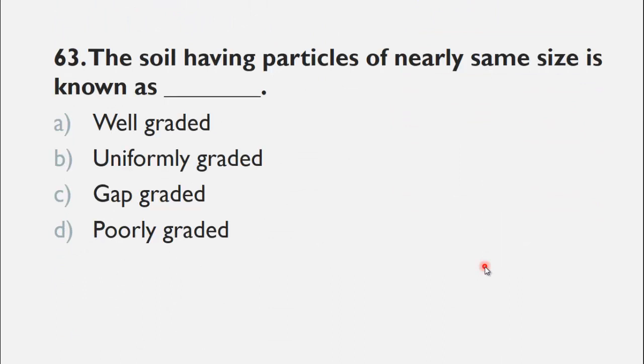MCQ number 63 is: The soil having particles of nearly the same size is known as ___. A) well graded soil, B) uniformly graded soil, C) gap graded soil, and D) poorly graded soil. So the right choice for this question is B, uniformly graded soil.